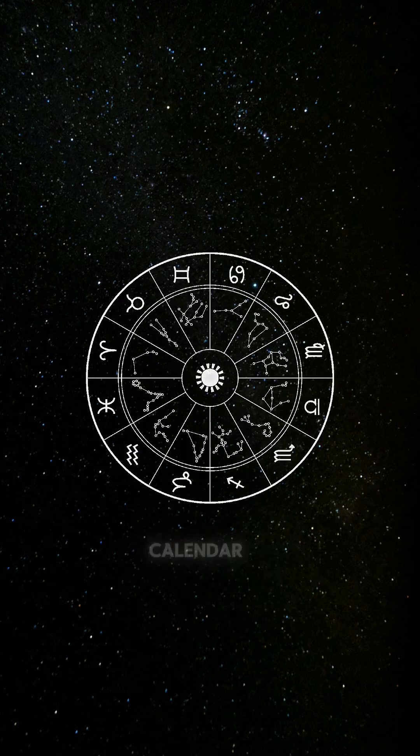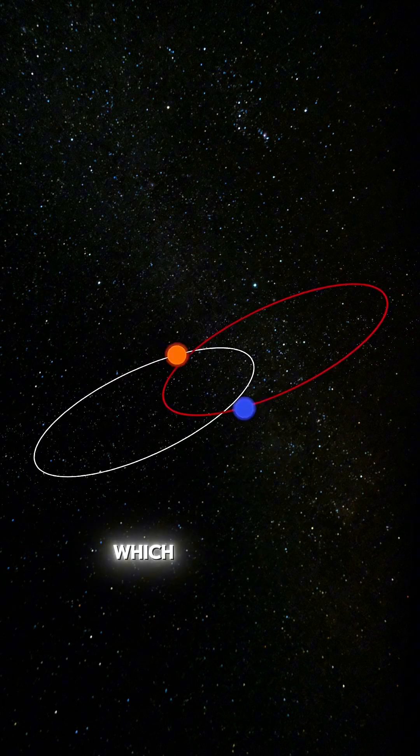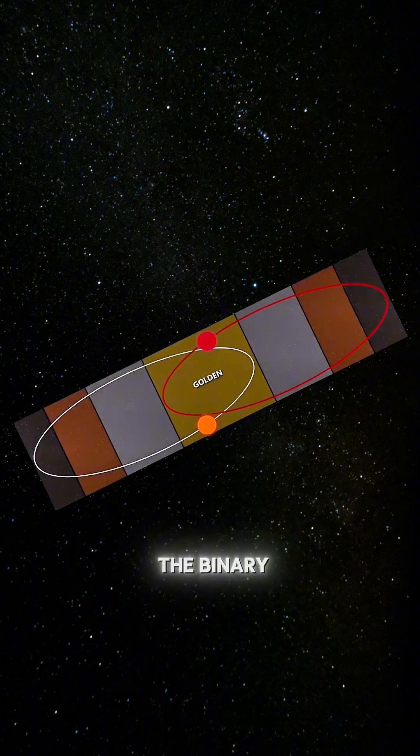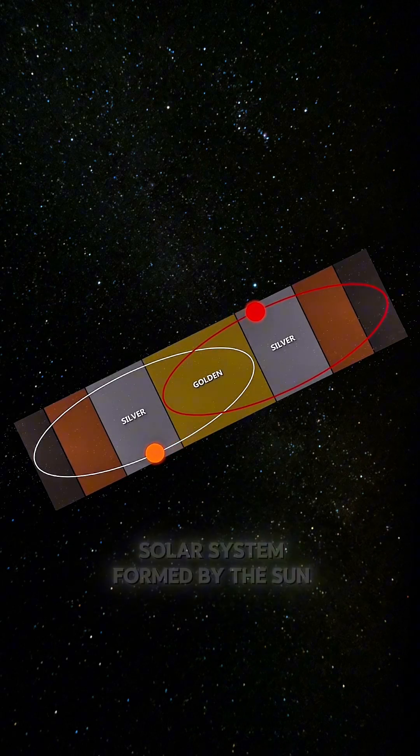The zodiac calendar is a calendar of the great year, which corresponds to the cycle of the binary solar system formed by the Sun and Sirius.